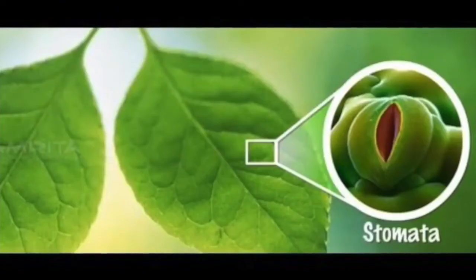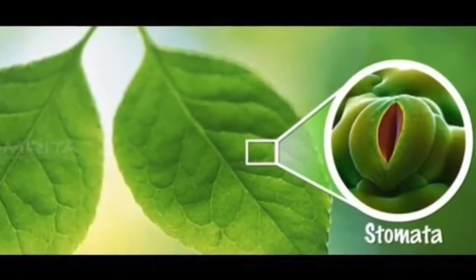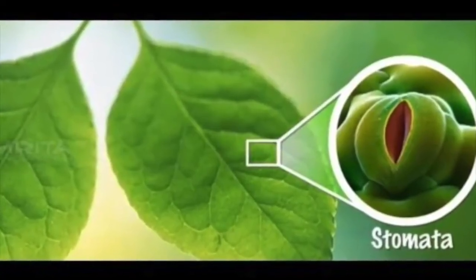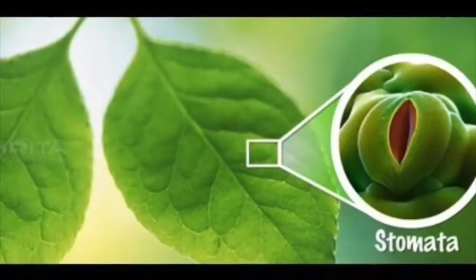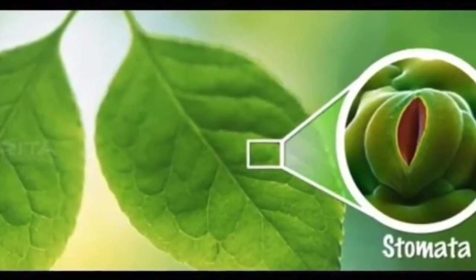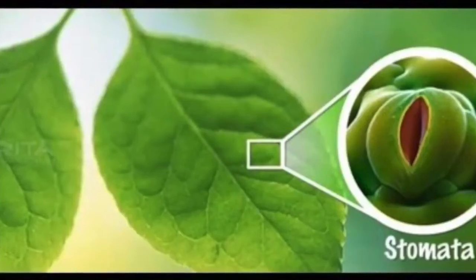Leaves are adapted for photosynthesis by having a large surface area and contain openings called stomata to allow carbon dioxide into the leaf. Although these design features are good for photosynthesis, they can result in the leaf losing a lot of water.